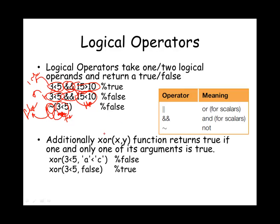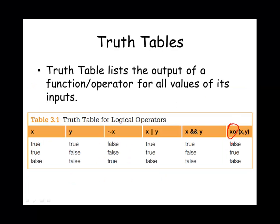There is an additional logical function called XOR, which returns true if and only if exactly one of its arguments is true. The XOR of (3 < 5), which is true, and (A < C), which is also true, will give us false because XOR requires only one of the two operands to be true. In the next example, XOR of (3 < 5), which is true, and the value false gives us true. By the way, XOR stands for exclusive OR.